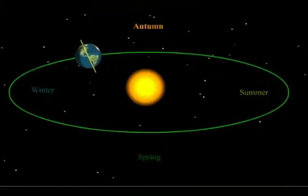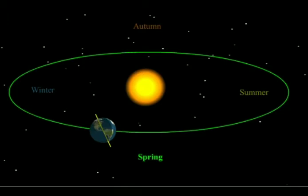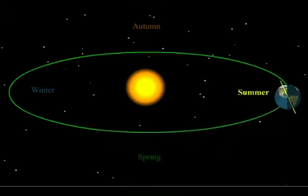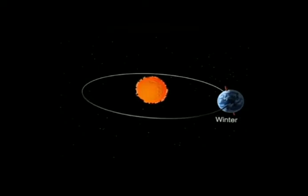Next, earth experiences four different seasons in a year. They are summer, autumn, winter, and spring.